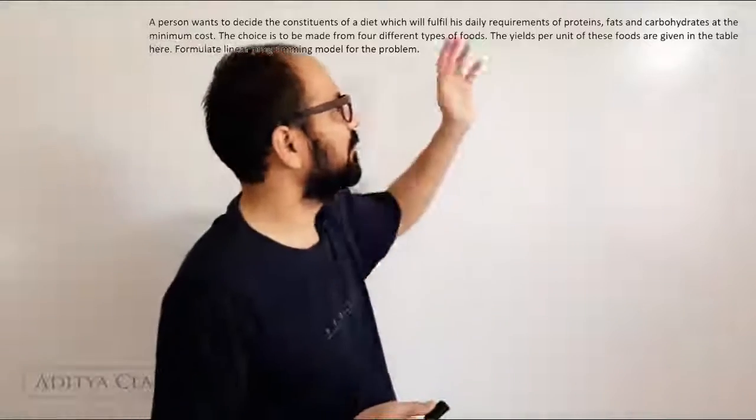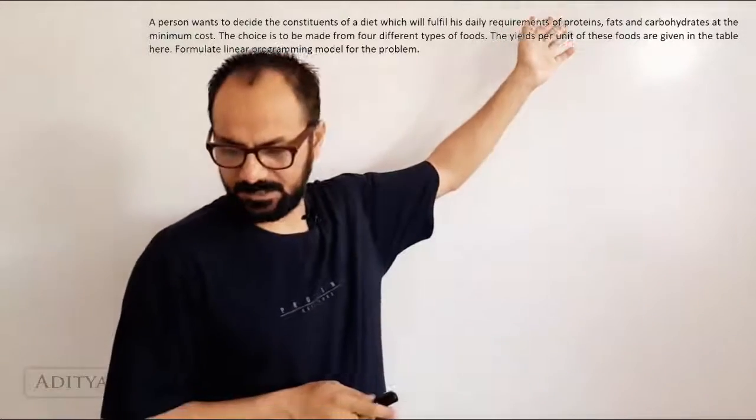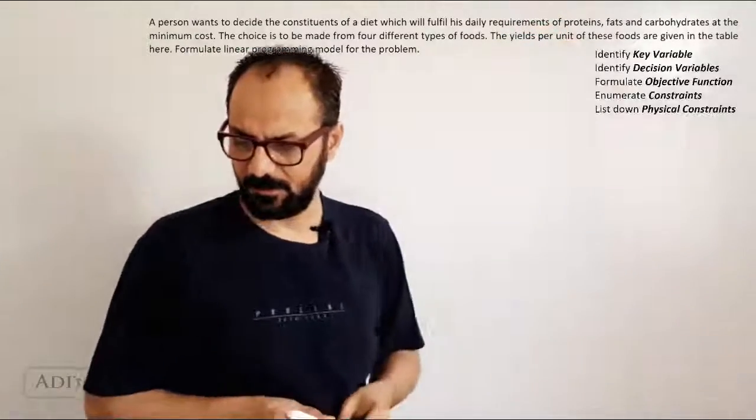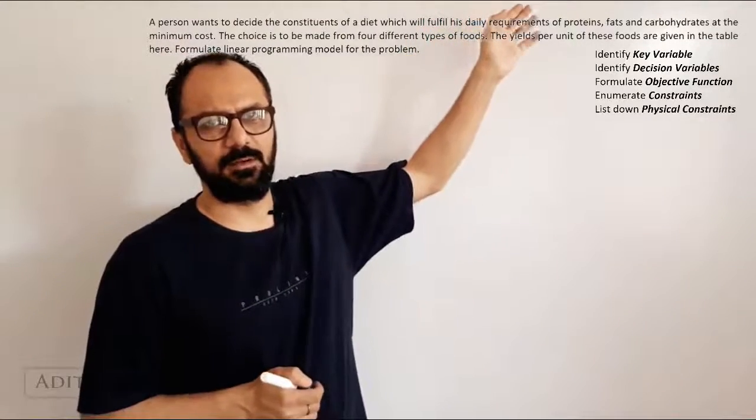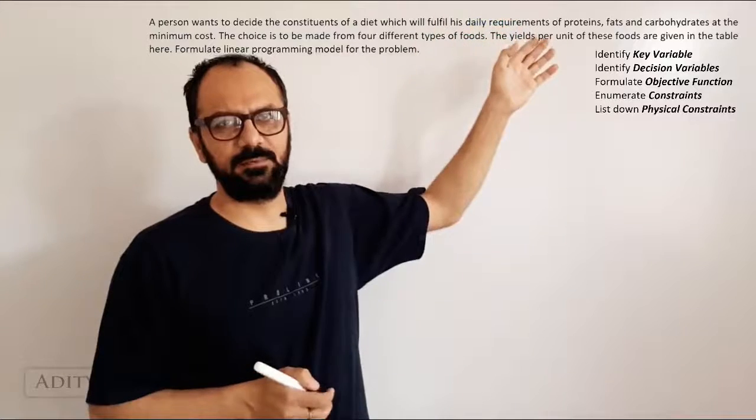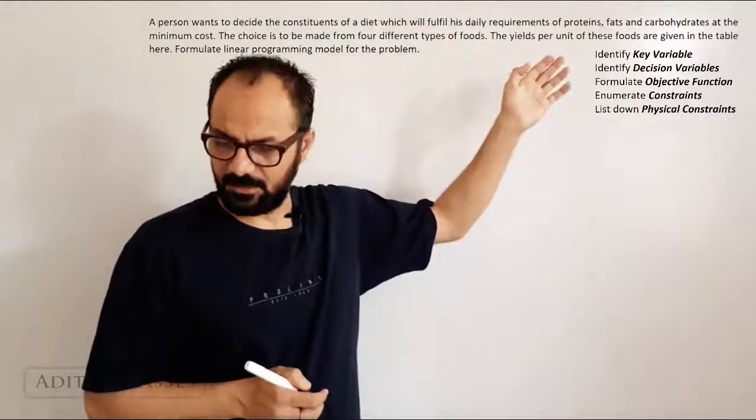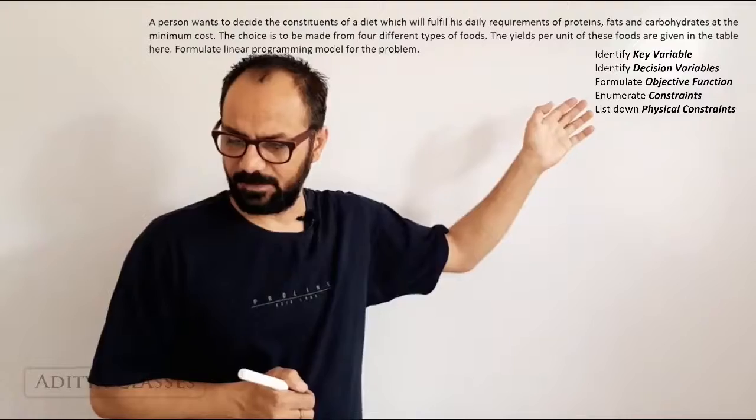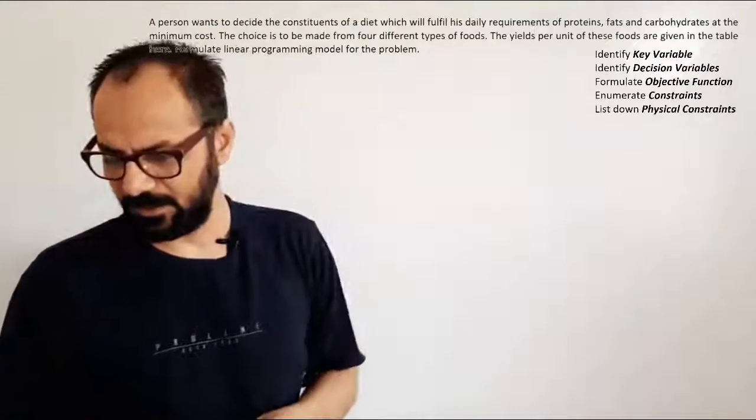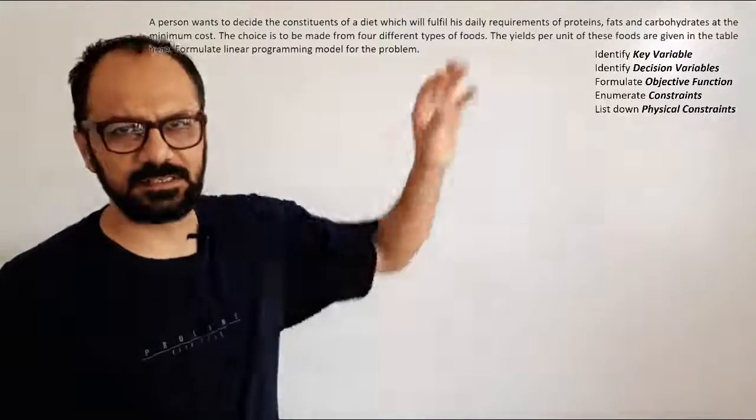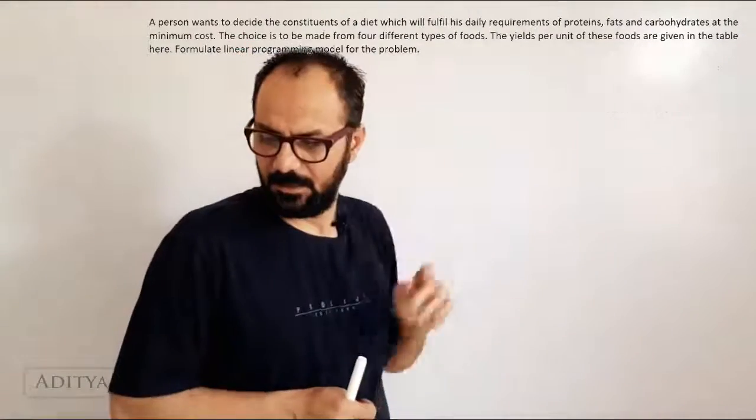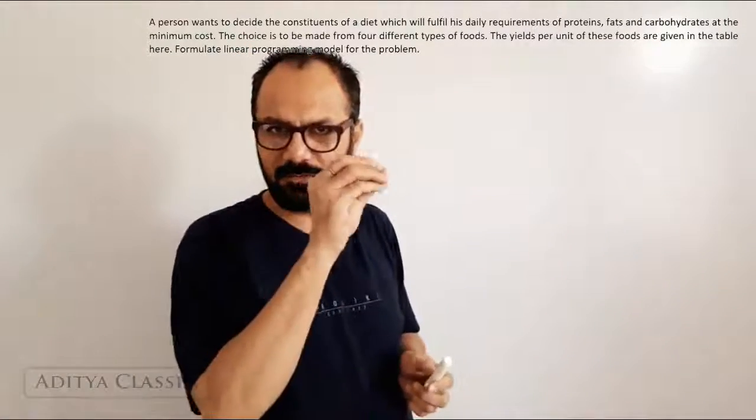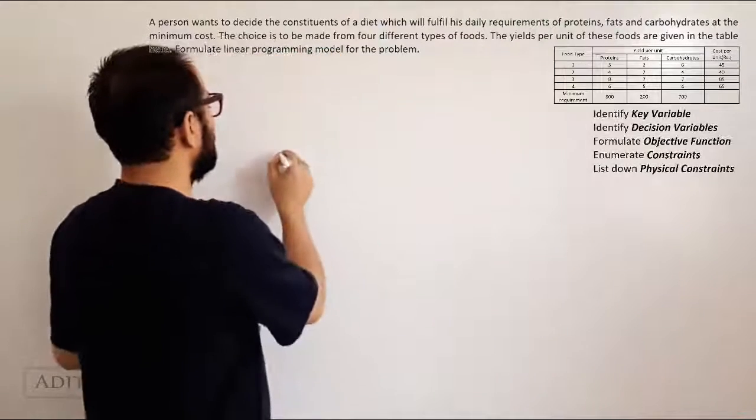So, we will get on with our task of formulation. Remember here are our steps once again. The five steps that we follow: identify key variable, identify decision variables, list down your objective function, enumerate your constraints and finally list down the physical constraints. So, these are the five steps that we will be following, here is our problem.